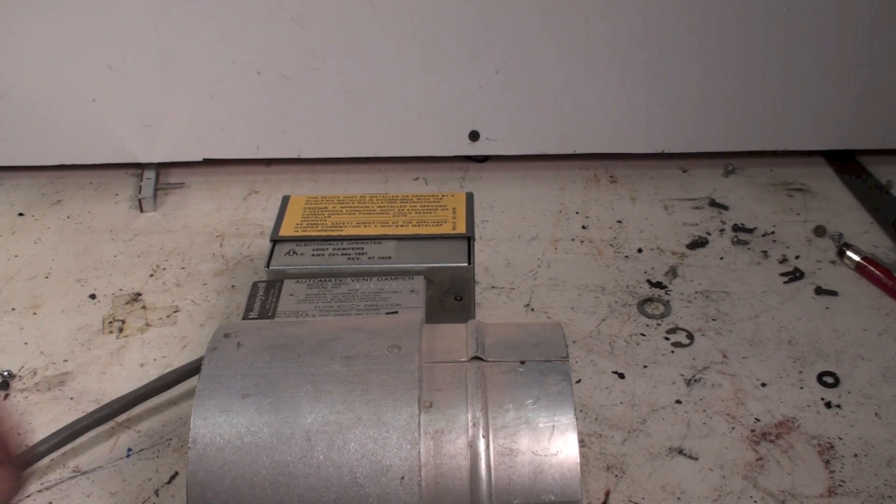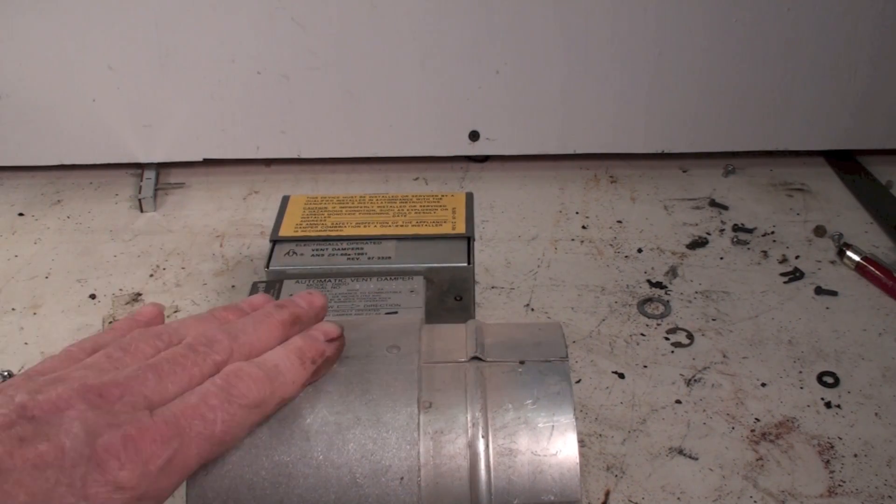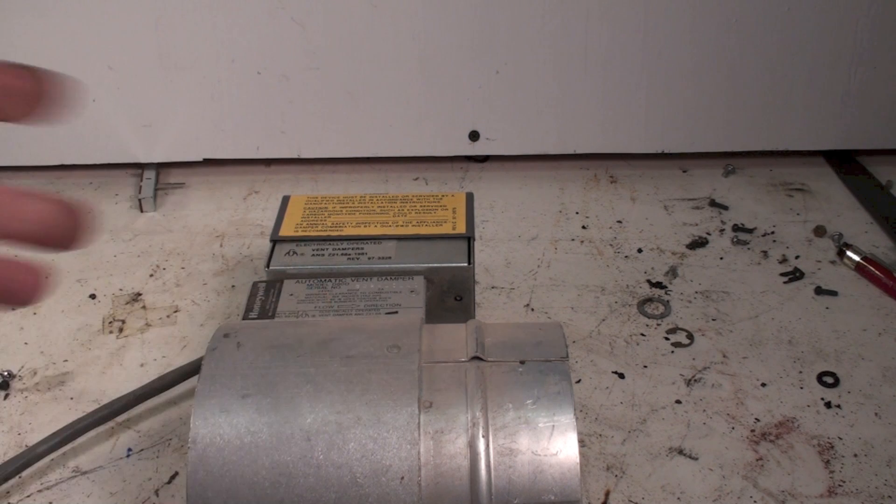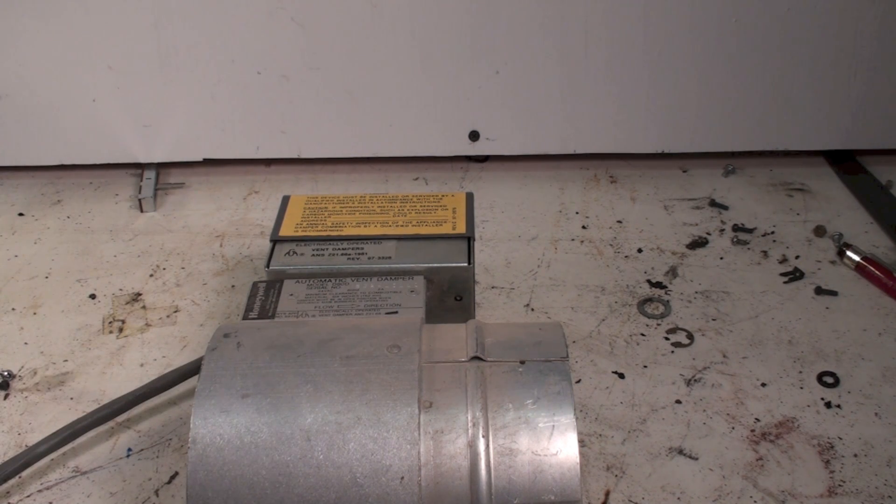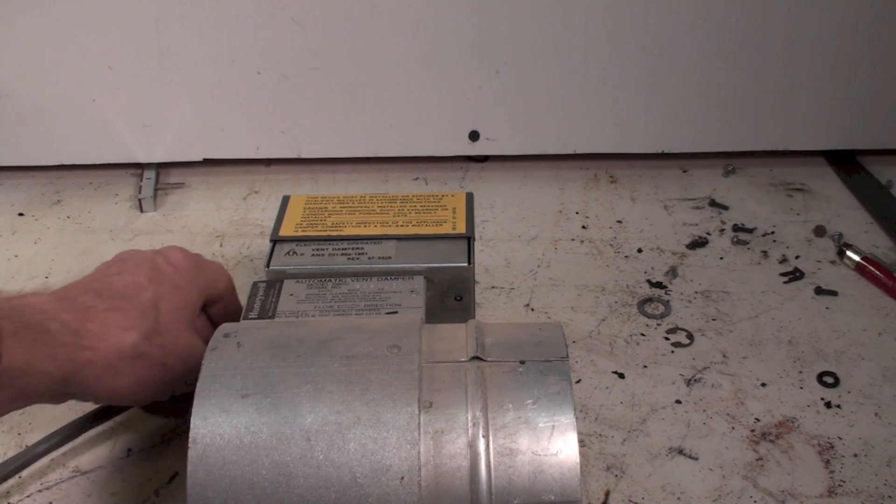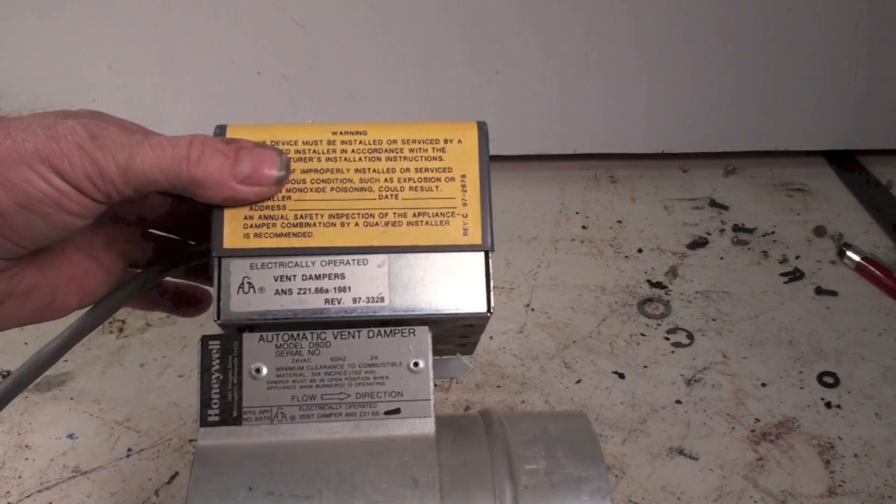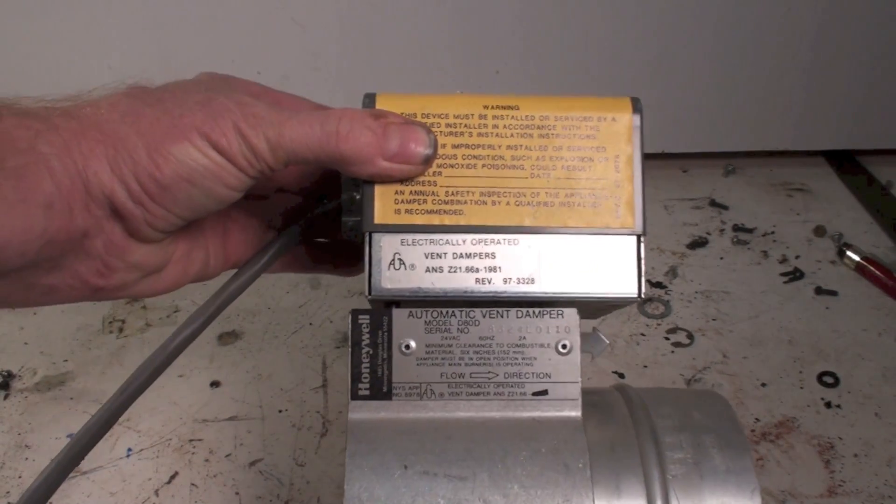They were put in there to close off the damper when the furnace is off so that you didn't lose temperature through that draft hood and out of the house. Now I'll get you a model on this sucker.